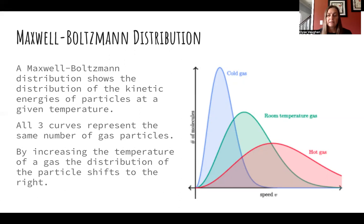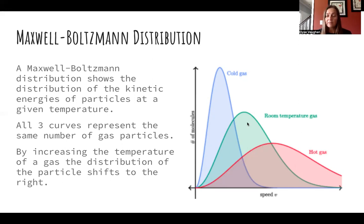As the gas heats up, the peak of the Maxwell-Boltzmann distribution — which represents the average speed — moves to the right, so speed increases as we go from a cold gas to room temperature to a hot gas. But this is an average: some particles move more slowly and some more quickly. When the average is high, there's more spread, giving a broad, low curve at high temperatures. As temperature decreases, there's a narrower distribution of speeds.